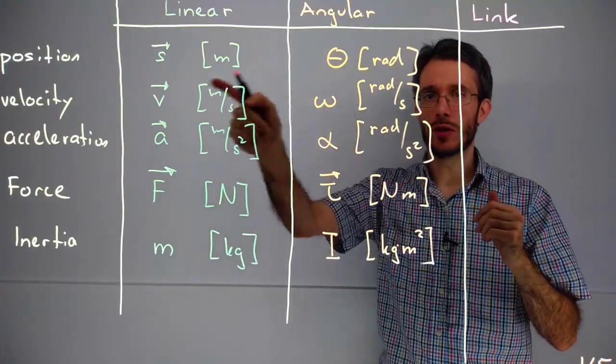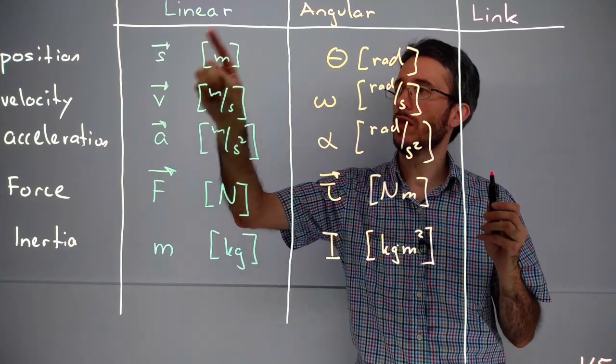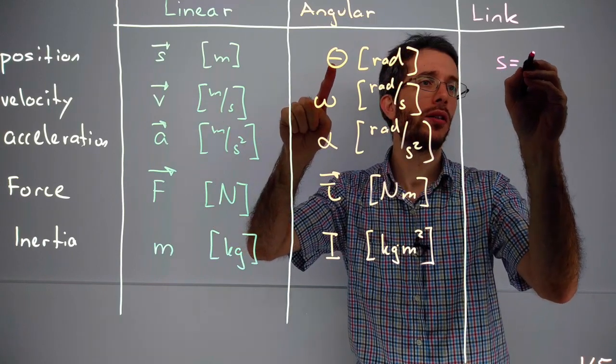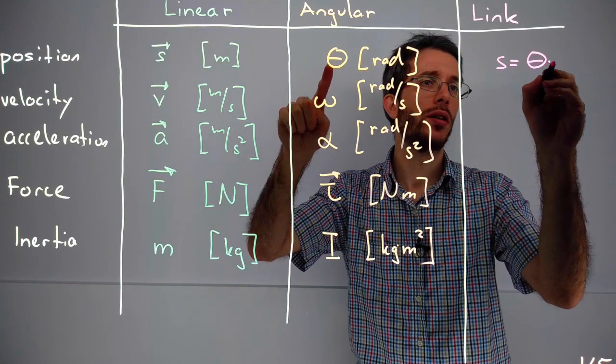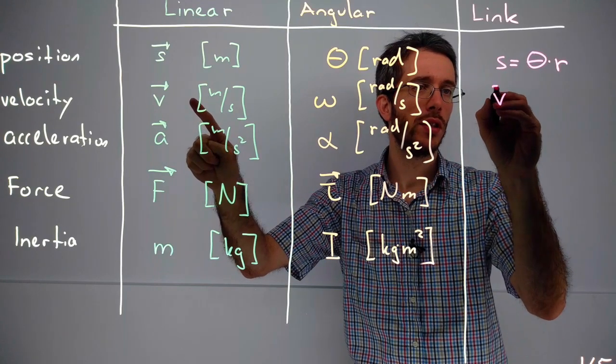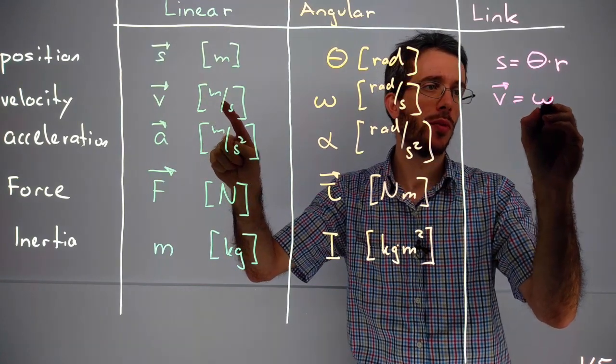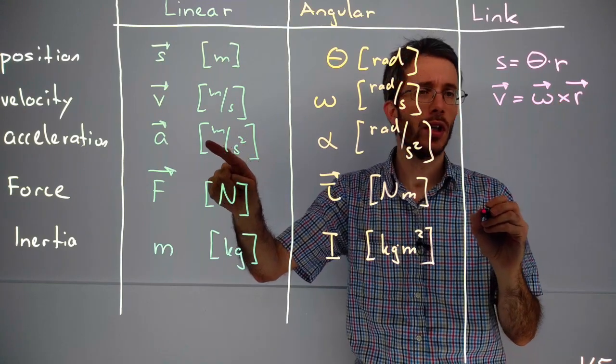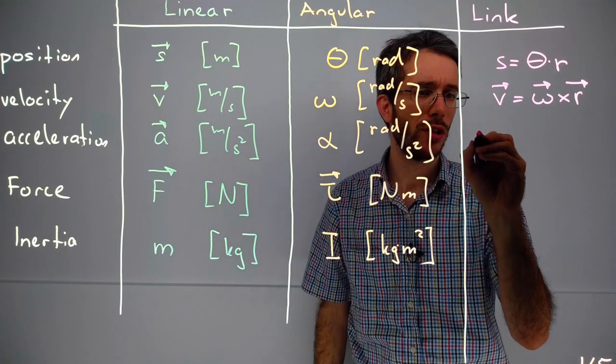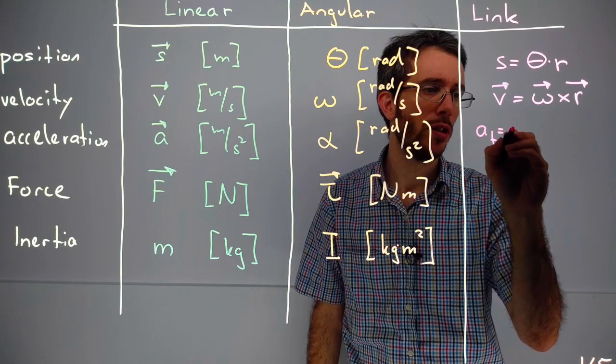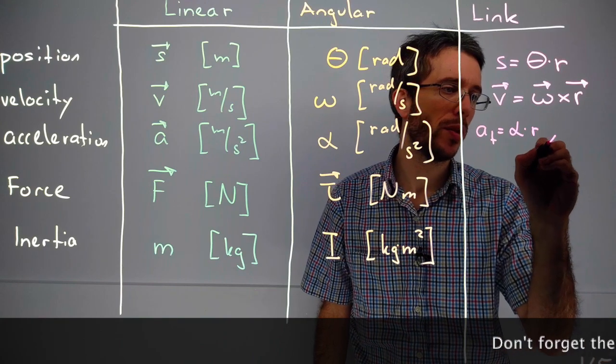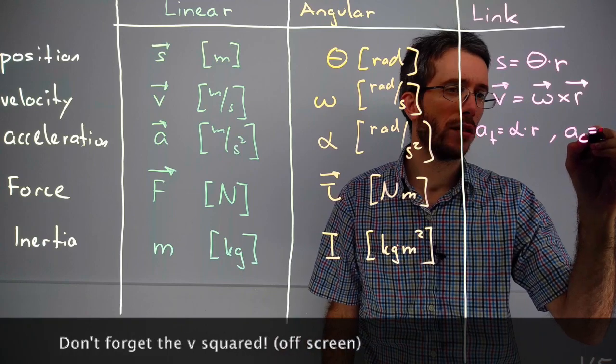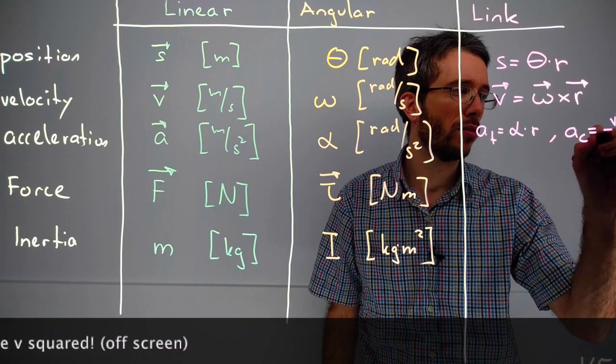What are the links between those two? If I want to know the distance traveled along a circle, then I can simply take my angular entity and multiply it by r. If I want to know my linear velocity, I can take my omega and the cross product with the r vector. If I want my acceleration, I have to split it up in my tangential acceleration, which is alpha times r, and my centripetal acceleration, which is v squared over r.